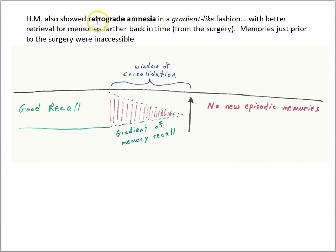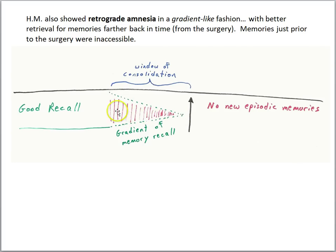Interestingly, HM also showed retrograde amnesia in a gradient-like fashion, with better retrieval for memories farther back in time from the surgery. Memories just prior to the surgery were inaccessible, but when scientists asked him to retrieve more remote memories, he had better and better success in a gradient-like fashion. This suggested that recently learned information had to undergo further processing to be retrievable without a hippocampus — what we call system consolidation, where memory is reorganized so the hippocampus is no longer needed for retrieval.